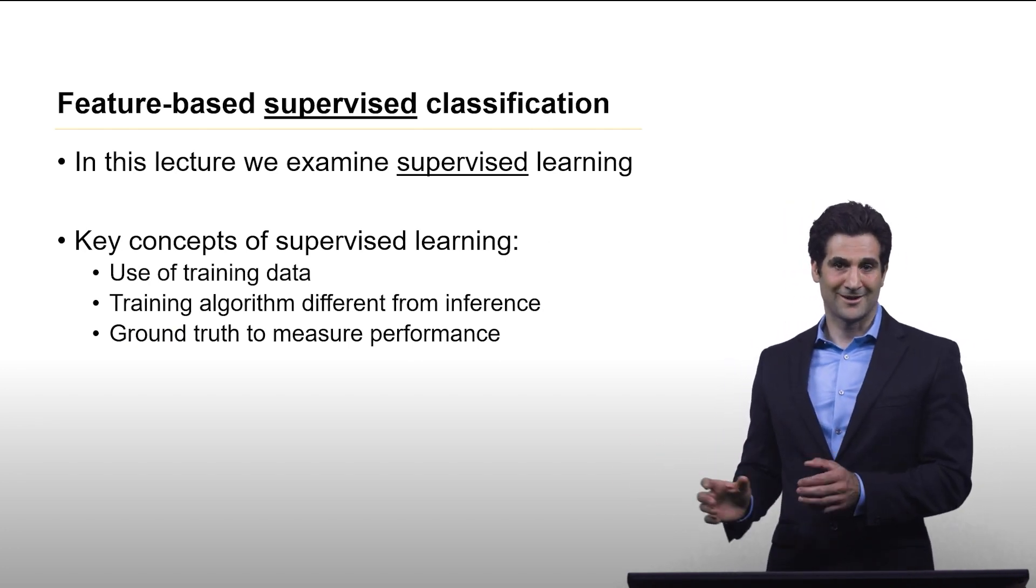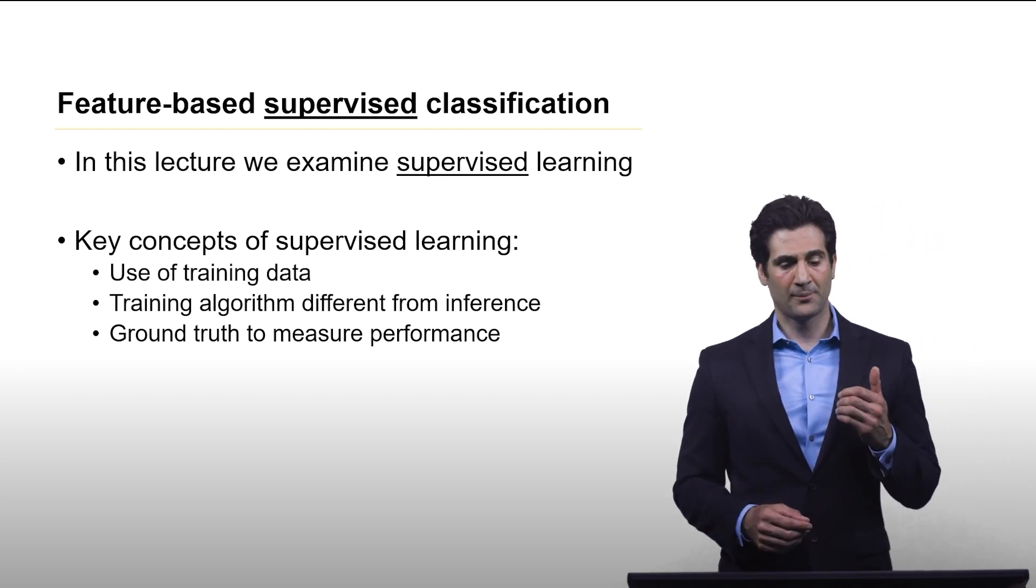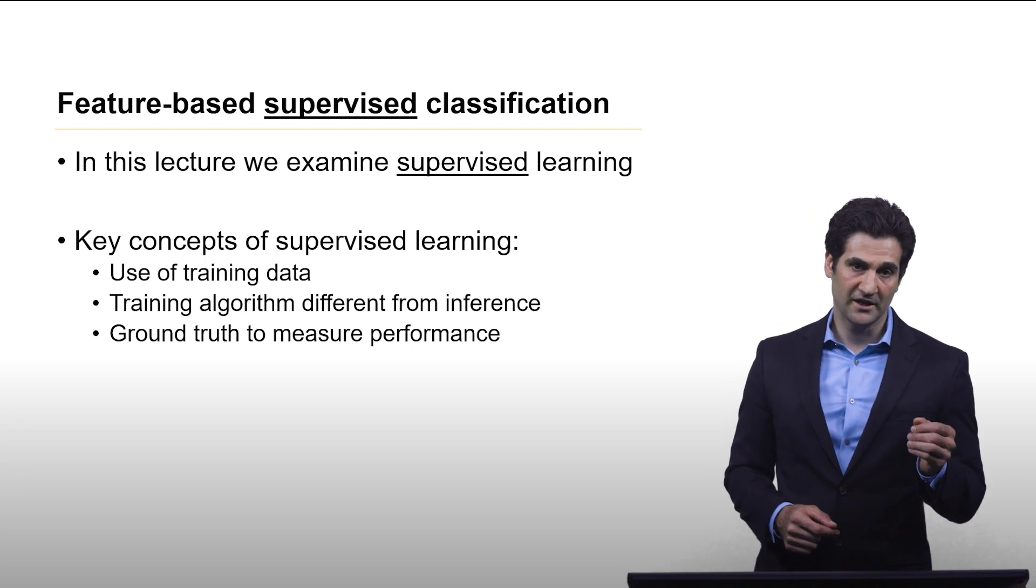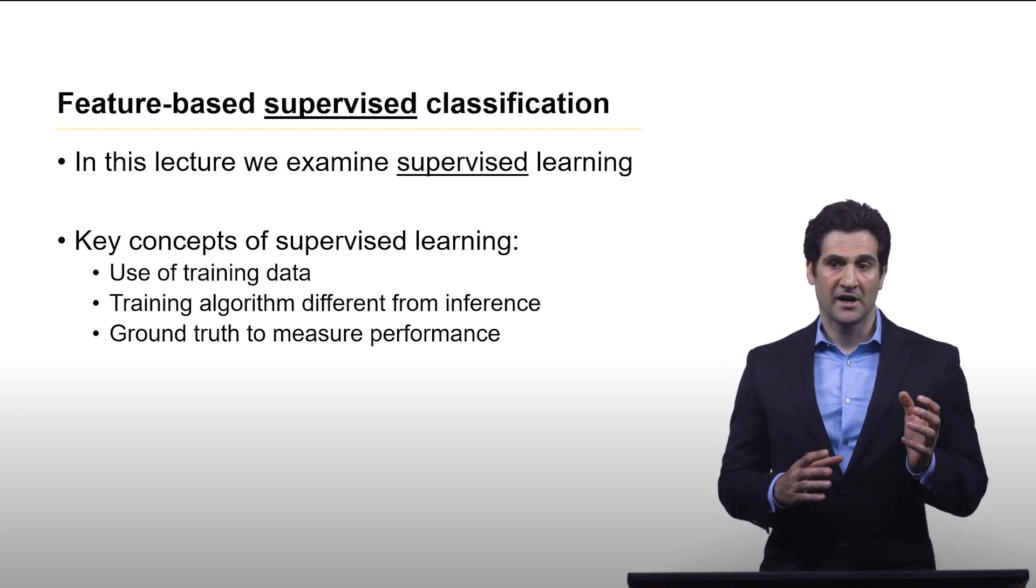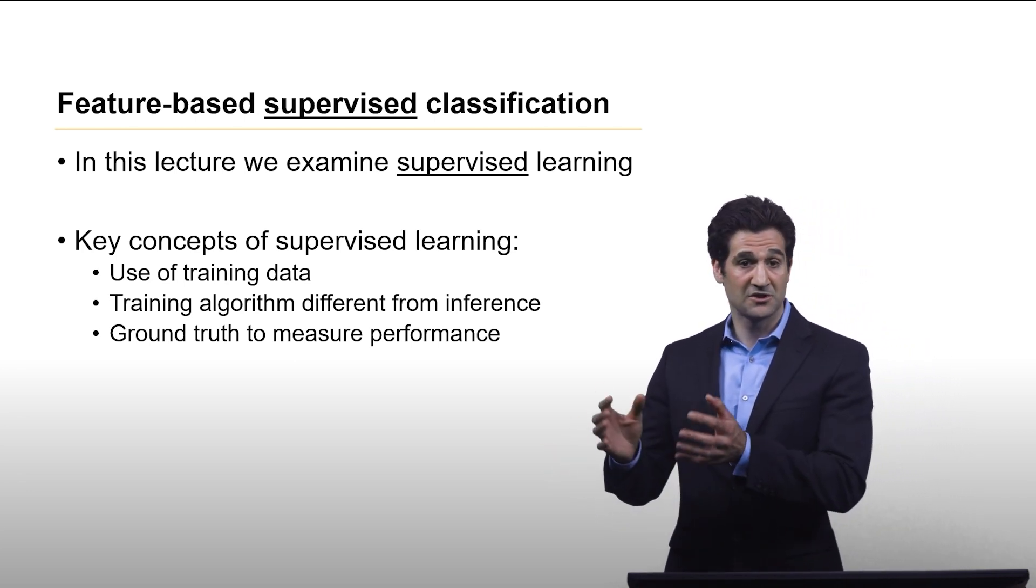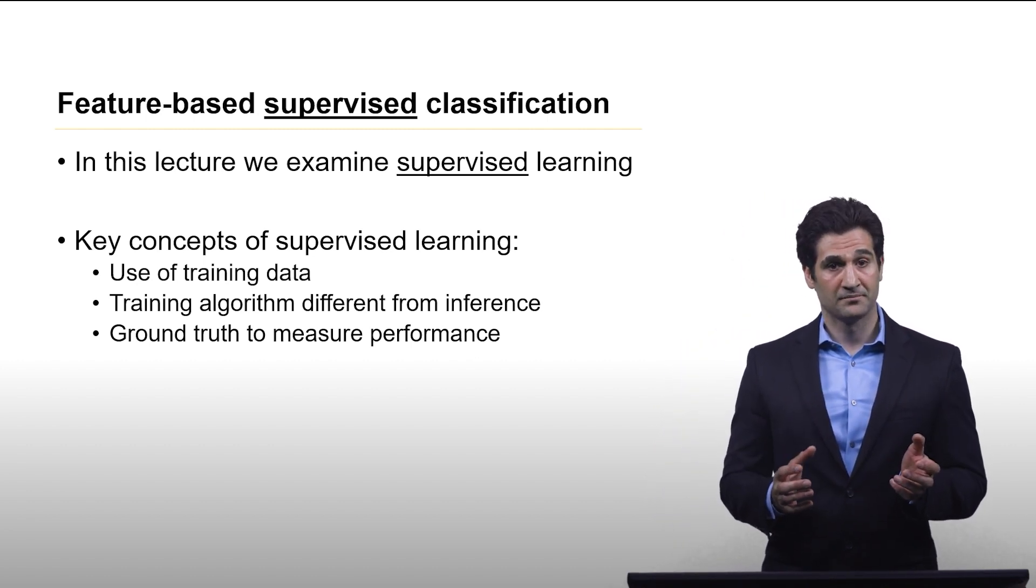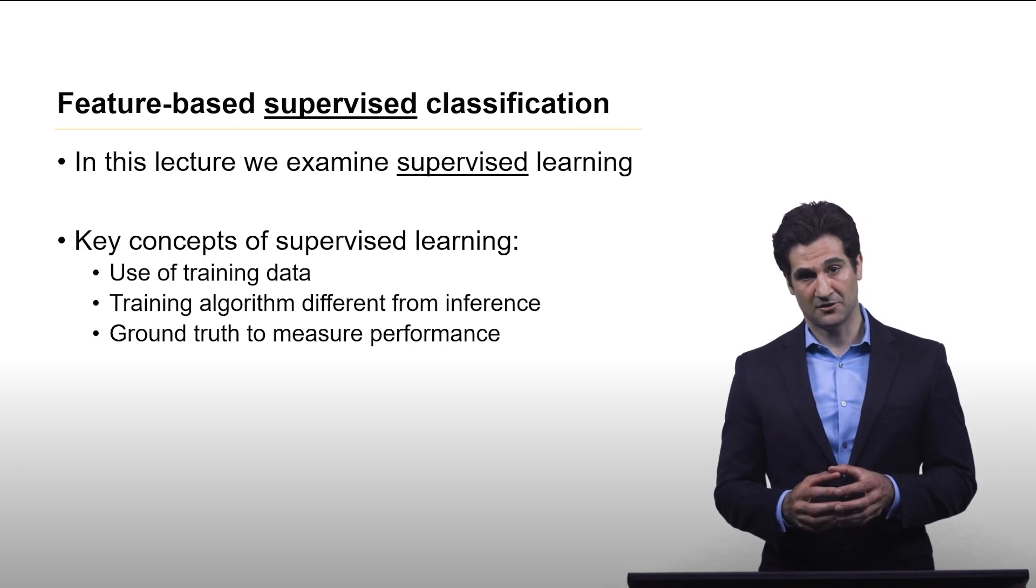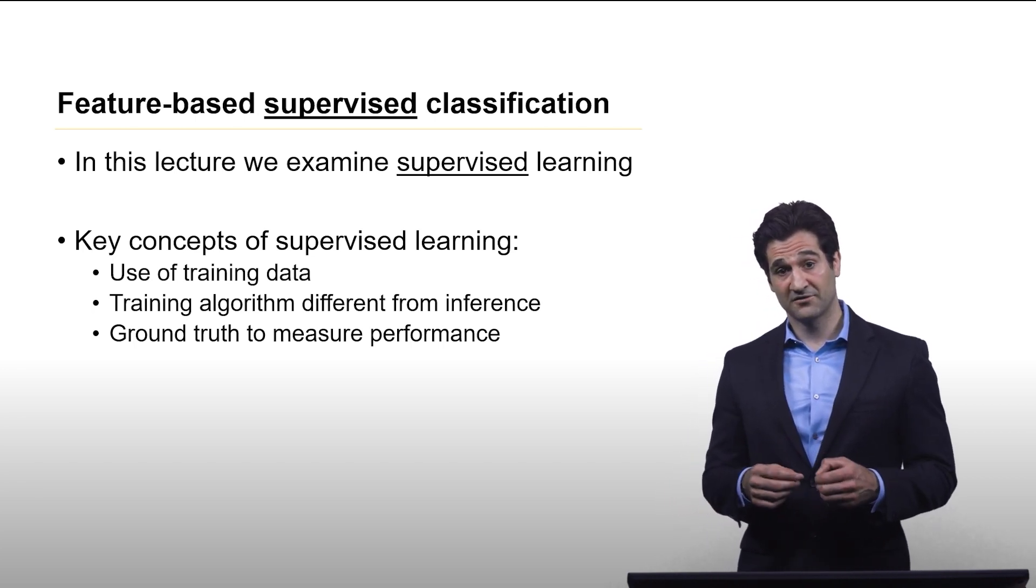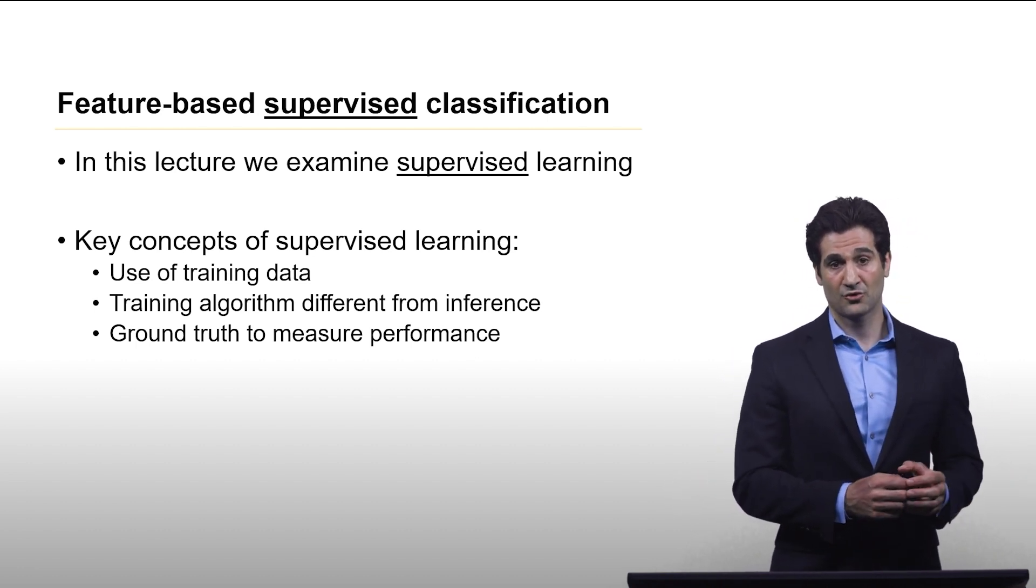The other key modifier of what we're talking about today is supervised learning. With supervised learning, you have the use of what's called training data. You have training data where you previously have all the measurements, all the features, and for each of those sets of measurements, you know what the result is. A training algorithm takes that training data and produces a model. That step is different from what's called inference. Inference is where you use the model to actually make the decision.